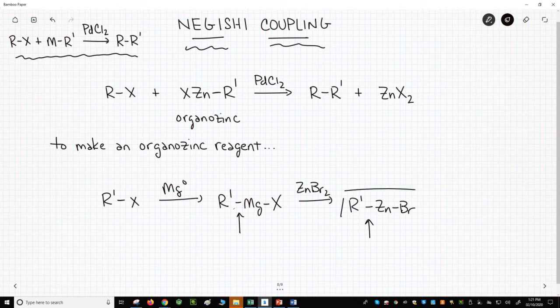Once you have the organozinc reagent, combine it with the aryl halide and your palladium catalyst to perform the coupling.